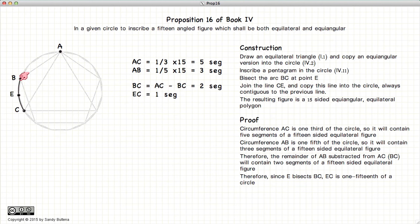Now since BC was divided into two or bisected, then the distance BE would be one fifteenth of our circle.